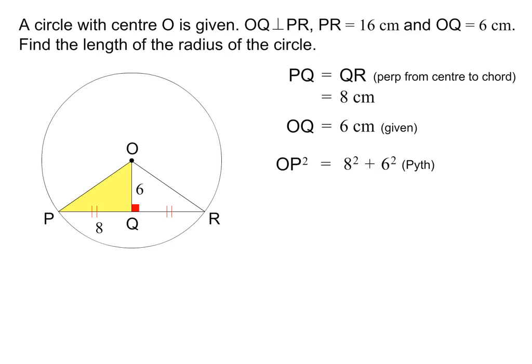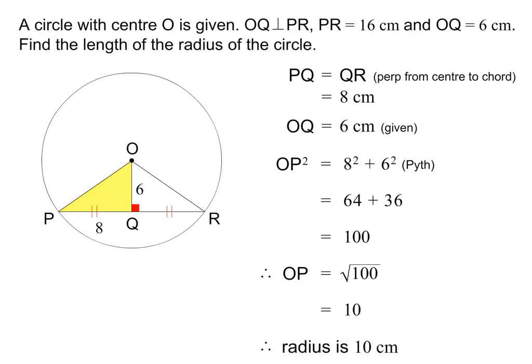In other words, OP squared is equal to 8 squared plus 6 squared, which is equal to 100. OP is therefore equal to 10. The length of the radius is therefore 10 cm. Please pause the lesson to check my working.